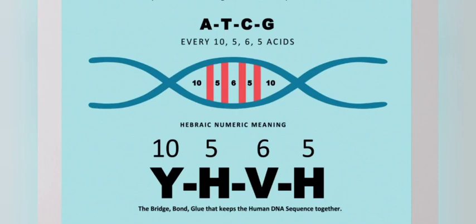At the base of our DNA, we have four main amino acids: A, T, C, G — adenine, thymine, cytosine, and guanine.